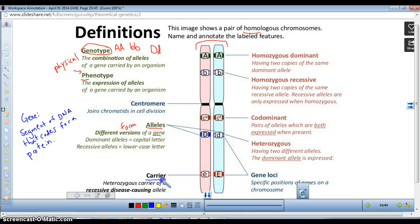When somebody is a carrier, when an individual is a carrier, that means they're heterozygous for a recessive disease-causing allele. So in this situation, this individual is heterozygous. And when people are heterozygous, they're also carriers.